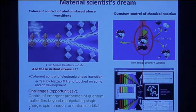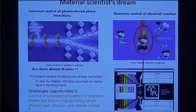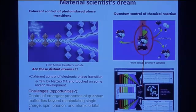As my colleague alluded this morning, there is a materials science dream to be able to achieve coherent control of quantum phases — this has been a very hot topic recently. In parallel, in chemistry, people have been working on photochemistry where they use a laser to manipulate molecular states by photo excitations.